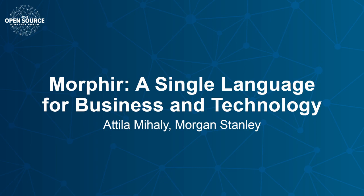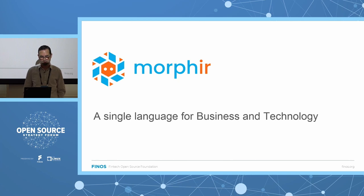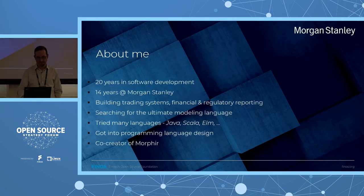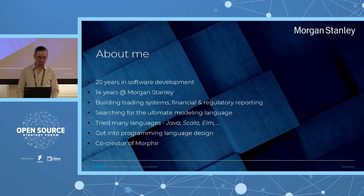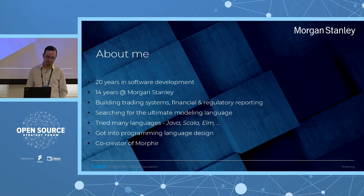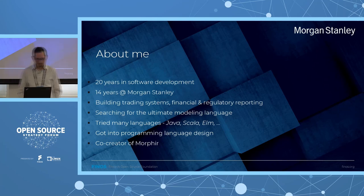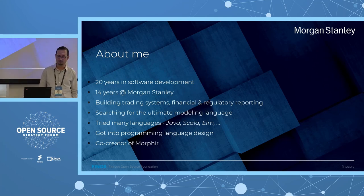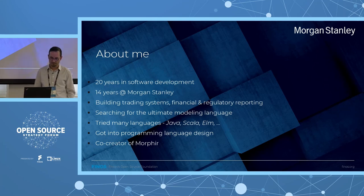Welcome to my talk titled Morpher, a single language for business and technology. Before I jump into the presentation, let me say a few words about myself. I spent almost two decades in software development, most of that working at Morgan Stanley — 14 years. For most of that I've been building trading systems and most recently moved on to financial and regulatory reporting. Throughout this whole period I was really searching for the ultimate modeling language, a language that allows me to express business problems in a very efficient way so that they can be solved using automation.